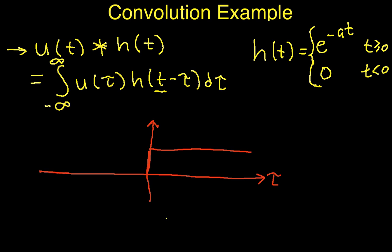It's zero for values of tau less than zero, and one for values of tau greater than zero.